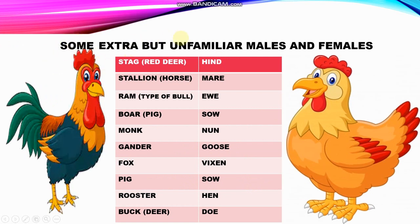Finally, let's look at some extra but unfamiliar male and female nouns. Stag, also known as red deer, has the feminine hind. Stallion — another name for a male horse — has the feminine mare. Ram is a type of male sheep, and its feminine is ewe. Boar is a male pig, and the feminine is sow. Monk and nun. Gander is the male of goose. Fox and vixen. Pig and sow. Rooster and hen. Buck — another name for male deer — has the feminine doe.